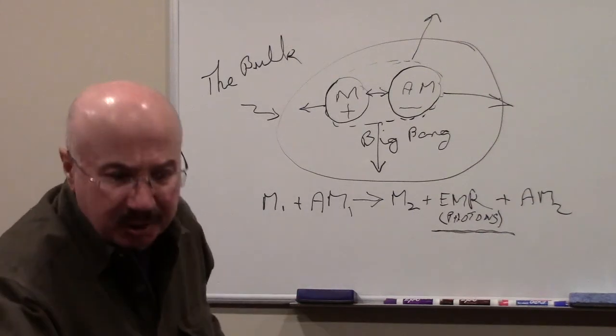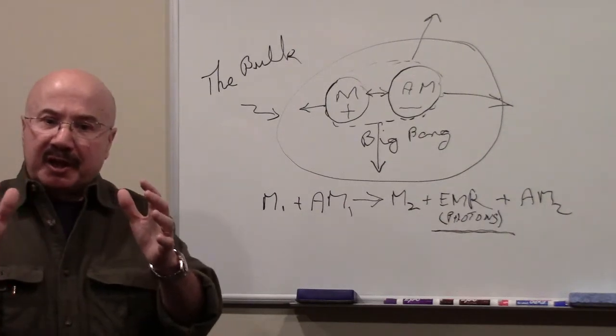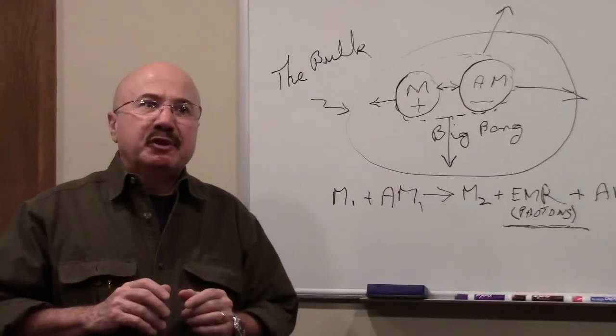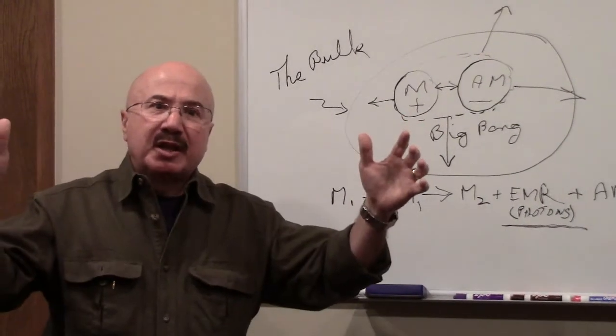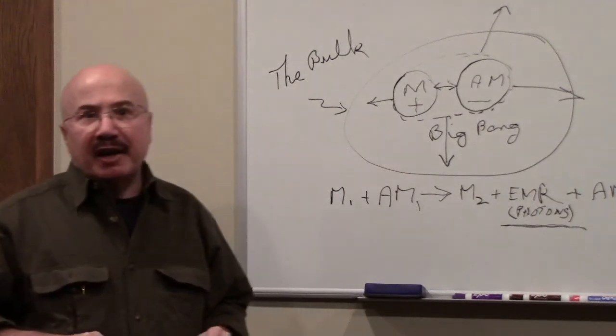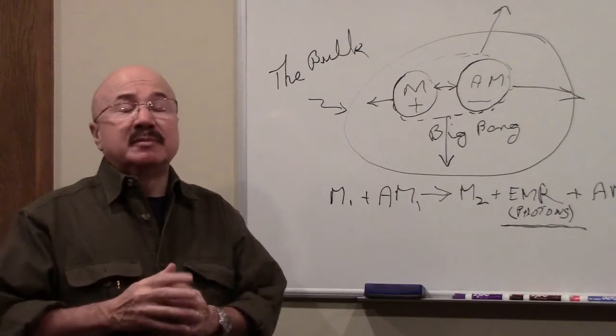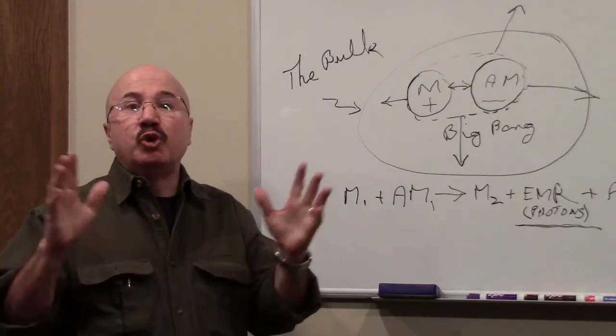Now, just to give you a depiction of that, this would be a linear expansion. See how my hands are going at a constant rate? That's a linear expansion. Now, if we want to talk about an exponential expansion, we're doing this. In other words, it went very fast at the initial point. And then, at some point, it went to a normal rate.